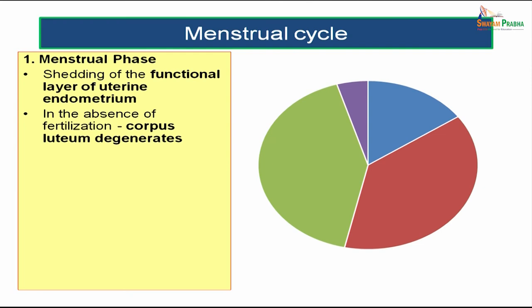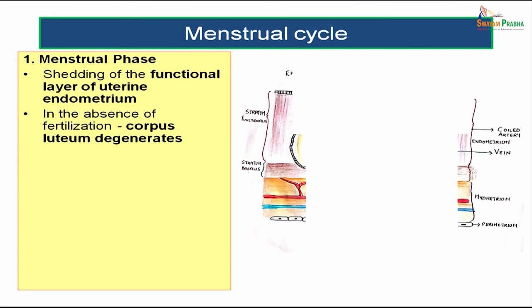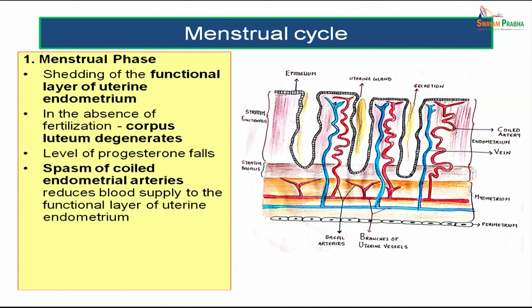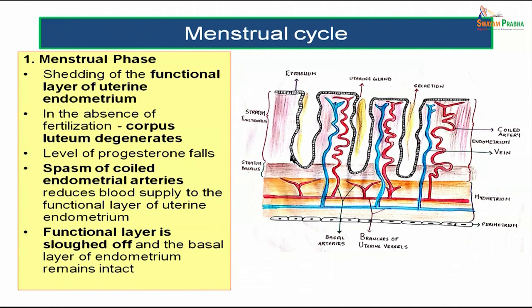In the menstrual phase (days 1–4), shedding of the functional layer of endometrium occurs. In the absence of fertilization, the corpus luteum degenerates and progesterone levels fall, causing spasm of the endometrial spiral arteries. Without blood supply, the functional layer undergoes ischemic changes and is sloughed off. The basal layer remains intact to support regeneration in the next proliferative phase.